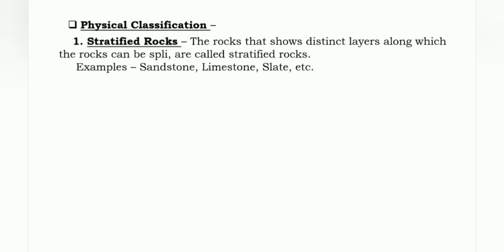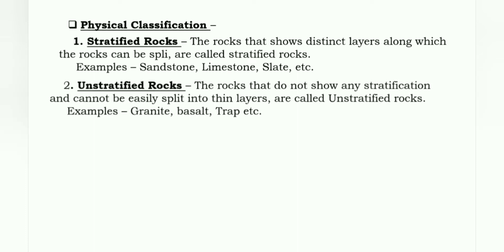Next is physical classification. First, stratified rocks: the rocks that show distinct layers along which the rocks can be split are known as stratified rocks. Examples: sandstone, limestone, slate, etc. Second is unstratified rocks: the rocks that do not show any stratification and cannot be easily split into thin layers are known as unstratified rocks. Examples: granite, basalt, trap, etc.